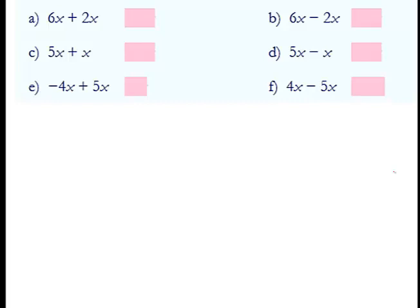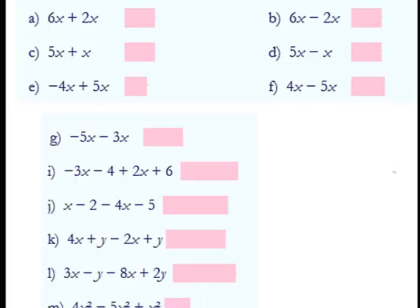Quick practice: 6X plus 2X is 8X. 6X squared minus 2X — those aren't like terms, so the result is 4X... wait, those stay separate: 6X squared minus 2X. 5X plus X is 6X. 5X minus X is 4X. Negative 4X plus 5X is 1X or just X. 4X minus 5X is negative X, or negative 1X.